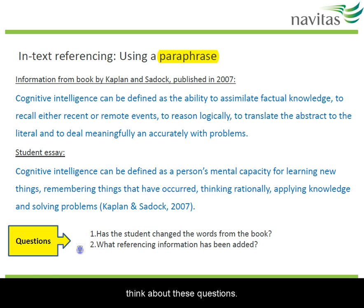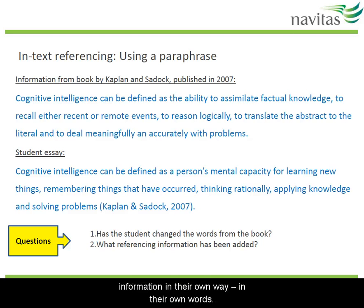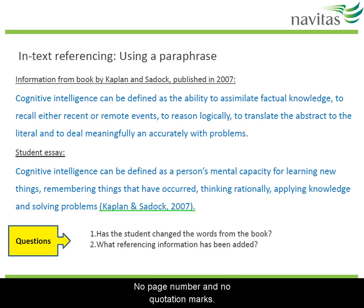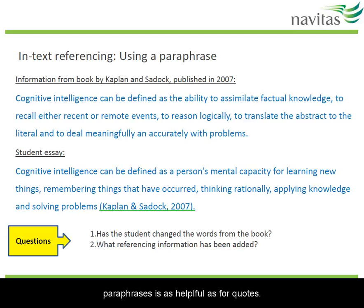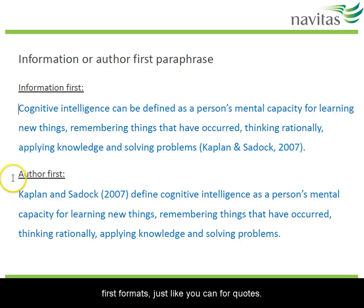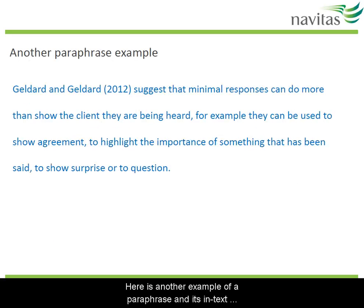Did you notice that the student has explained the information in their own way, in their own words, although the meaning is the same? That's paraphrasing. The referencing information is the author's surnames and the year of publication. No page number and no quotation marks. Paraphrases are often summaries of more than one page of a source, so putting a page number for paraphrases is not as helpful as for quotes. You can put paraphrases in information-first and author-first formats, just like you can for quotes. Here's another example of a paraphrase and its in-text referencing. Pause to take a look.